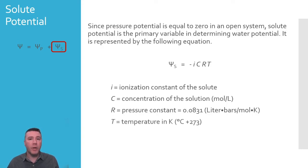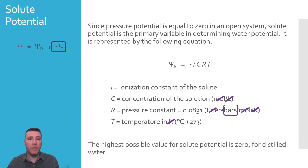For this equation, temperature is represented using Kelvin. If we do a bit of dimensional analysis, removing the moles, the liters, and the kelvins, we're left with the unit for potential, which is bars. Just like atmospheres, millimeters of mercury, or torr, bars are a unit of pressure. The highest possible value that can be calculated for solute potential would be zero.